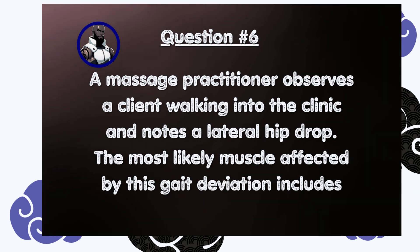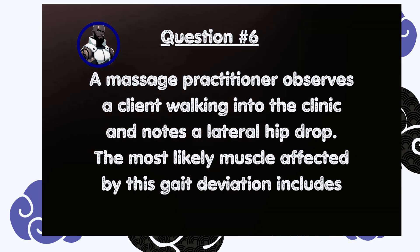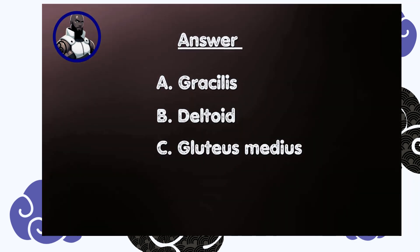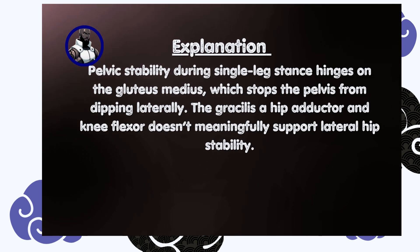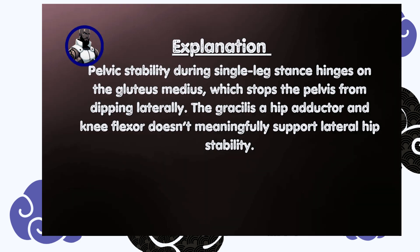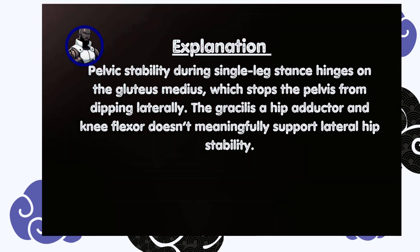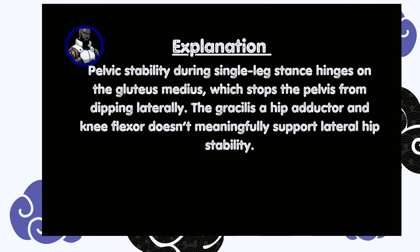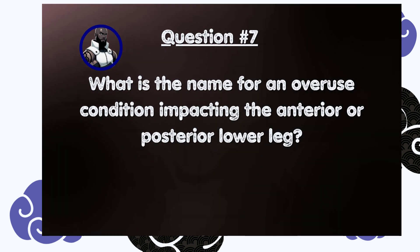Question number six: a massage practitioner observes a client walking into the clinic and notes a lateral hip drop. The most likely muscle affected by this gait deviation includes: A) Gracilis, B) Deltoid, C) Gluteus medius. Answer is C, gluteus medius. Pelvic stability during single-leg stance hinges on the gluteus medius, which stops the pelvis from dipping laterally. The gracilis, a hip adductor and knee flexor, doesn't meaningfully support lateral hip stability.